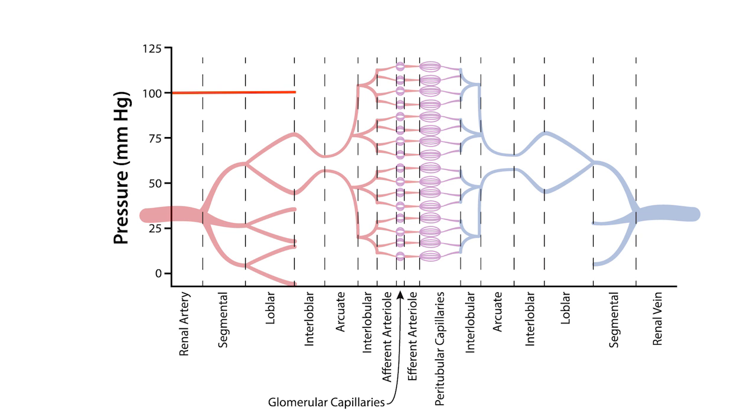It remains elevated until it reaches the afferent arterioles. At this point, the pressure decreases from 100 to 50 millimeters of mercury across the afferent arteriole until it reaches the glomerular capillaries, where it remains stable at 50 millimeters of mercury along the length of the entire capillaries.